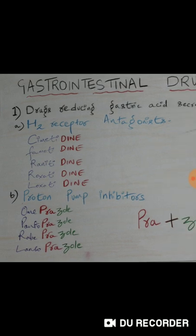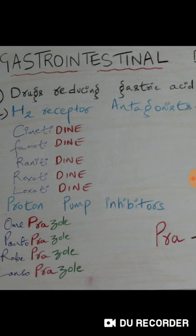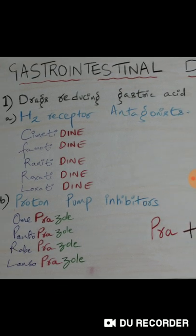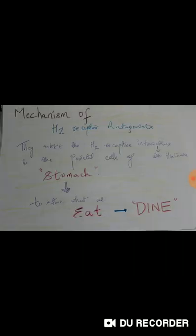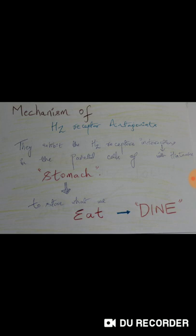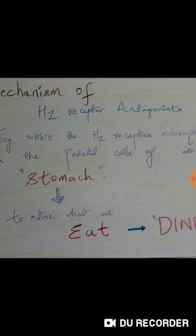For the H2 receptor antagonist mnemonic, you need to know the mechanism of action. They inhibit the H2 receptor interactions with histamine in the parietal cells of the stomach. What you have to emphasize here is the word 'stomach.'